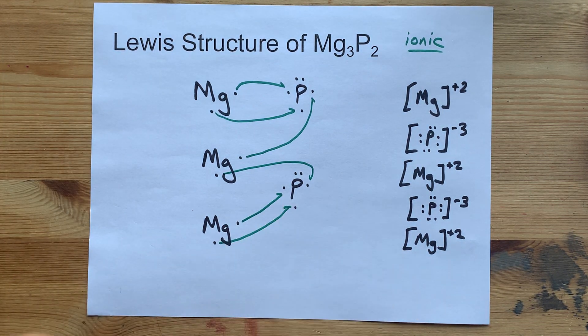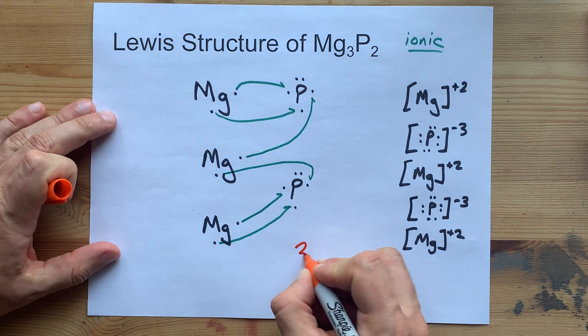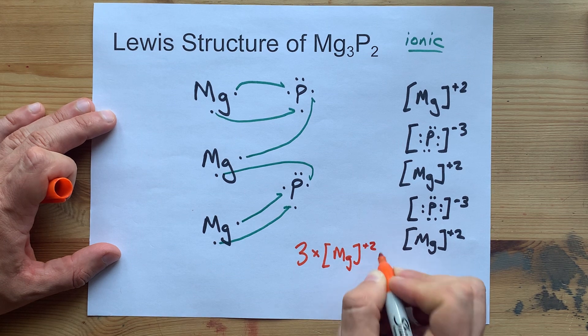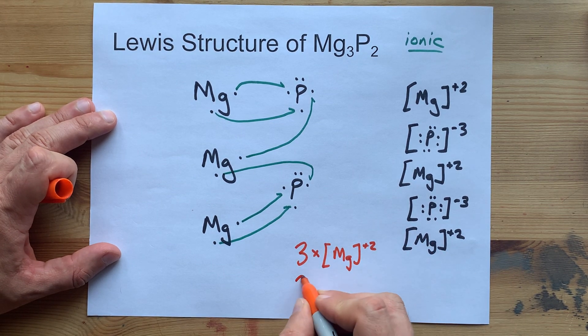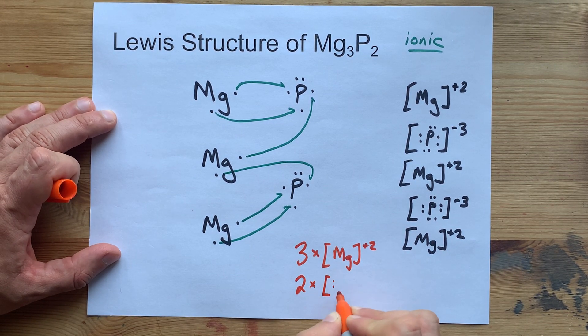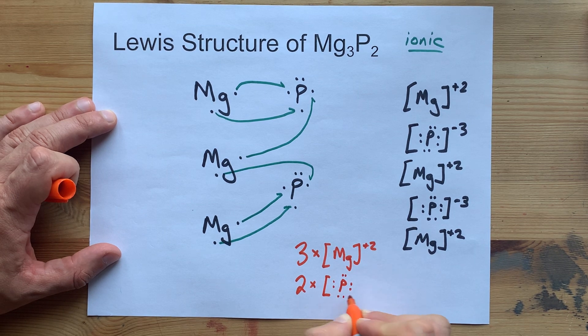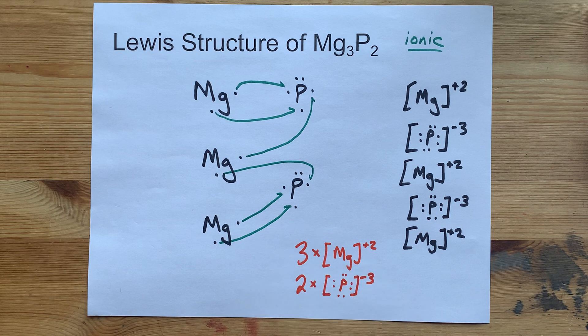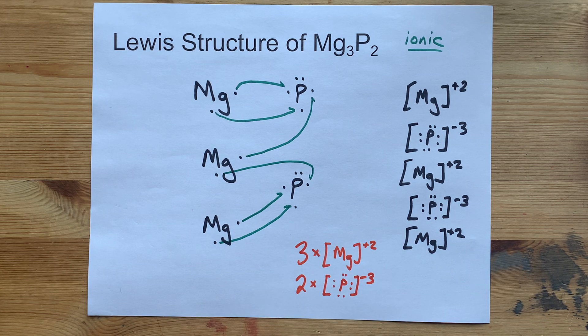You might be allowed to take a little shortcut here. You might be allowed to say 3 times Mg instead of writing that out 3 times, and 2 times the phosphorus. See how much faster that was? Make sure you're allowed to use that shortcut before you actually do.